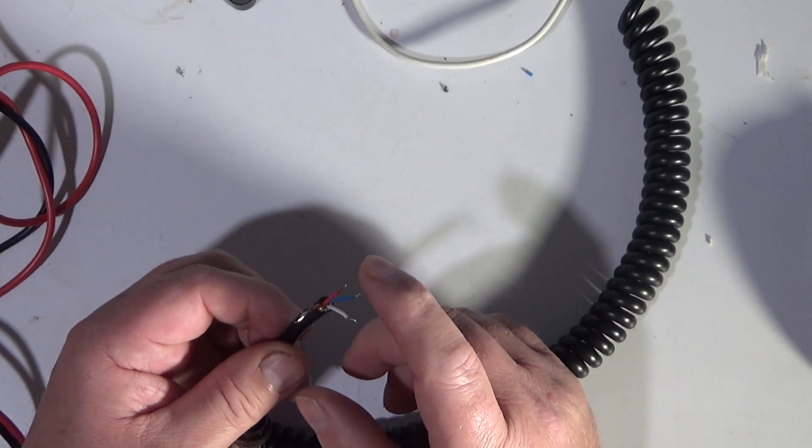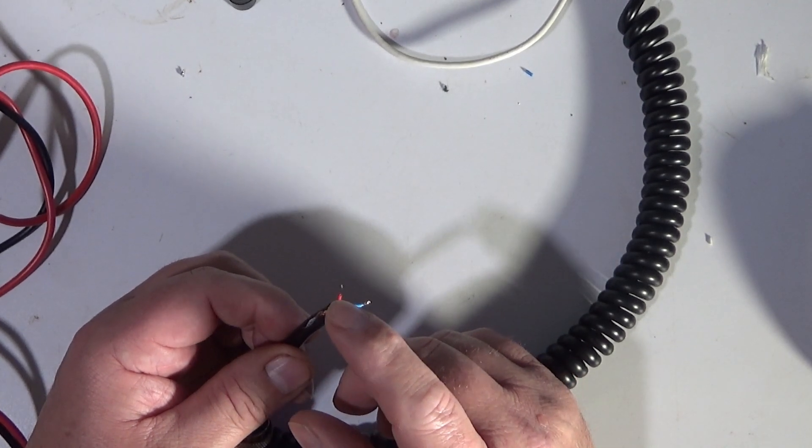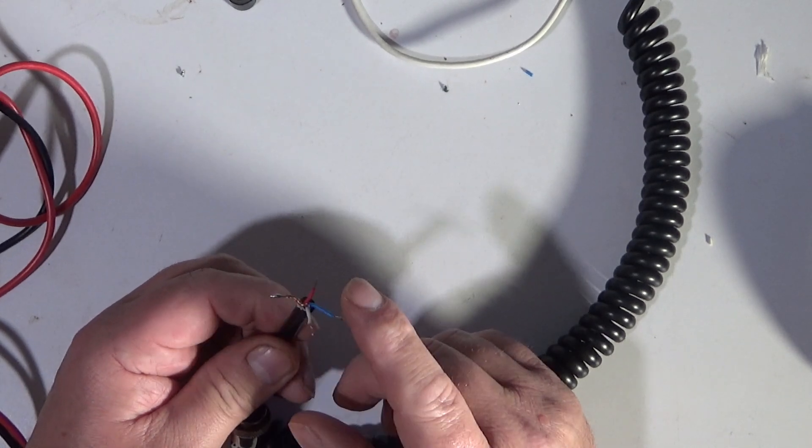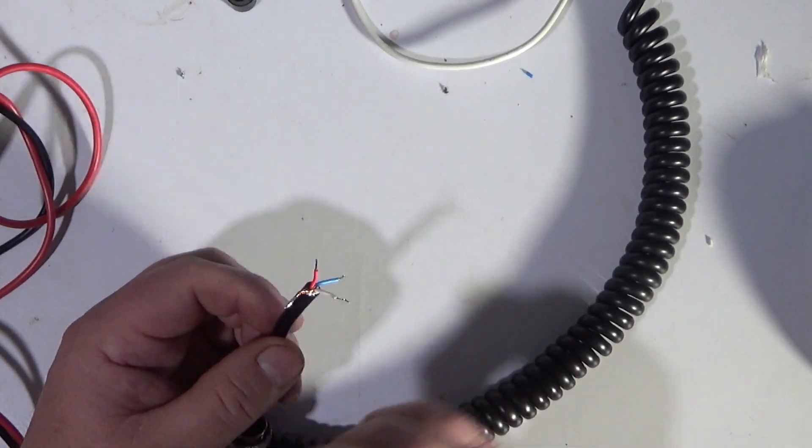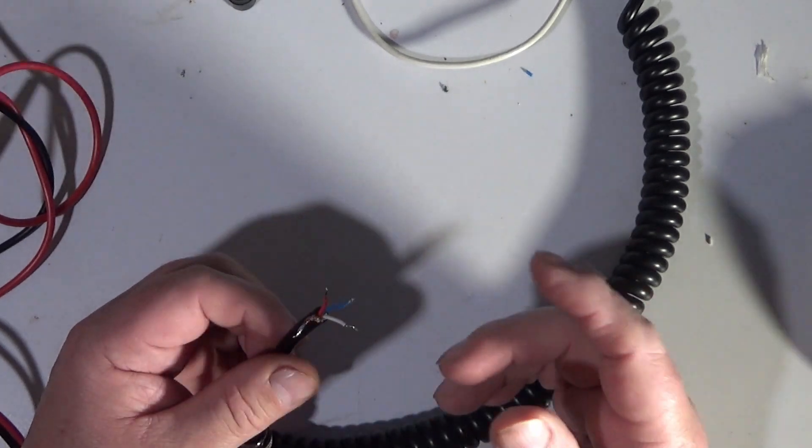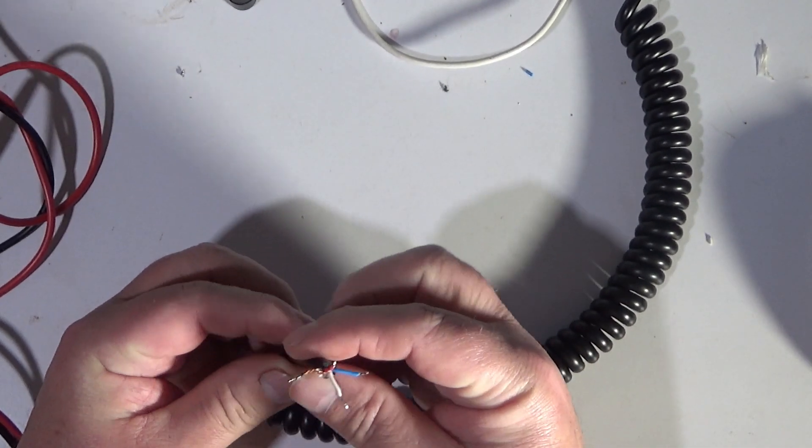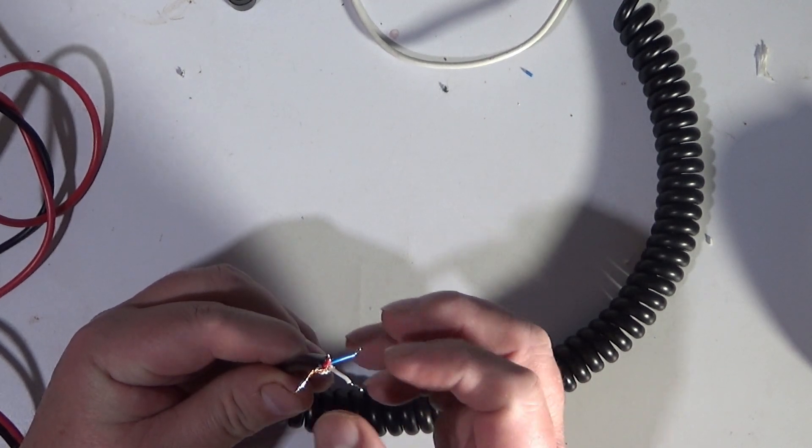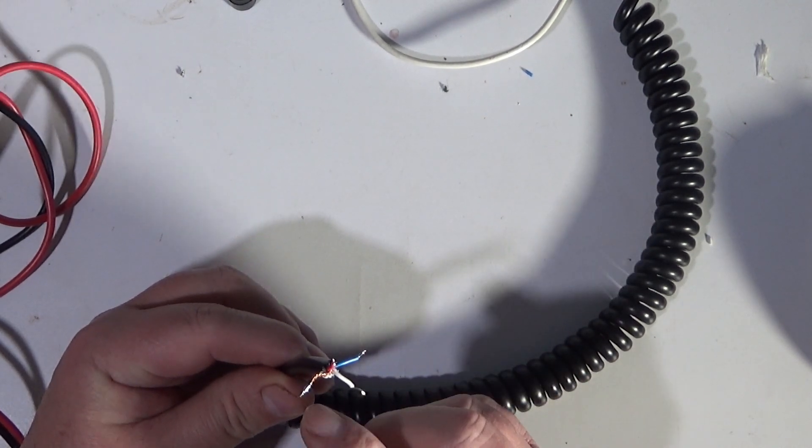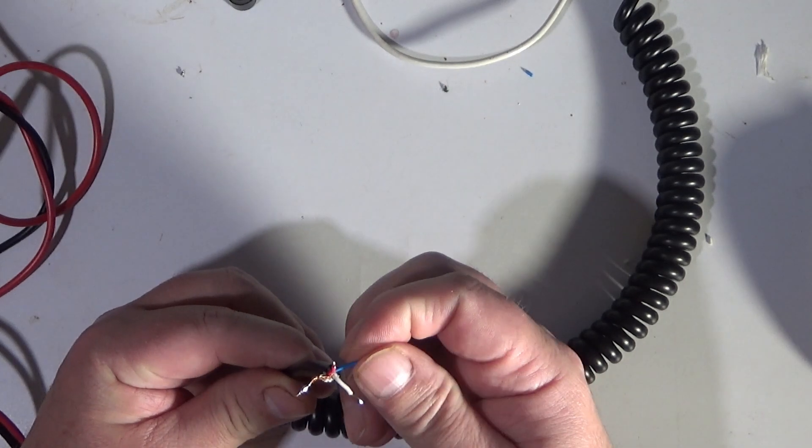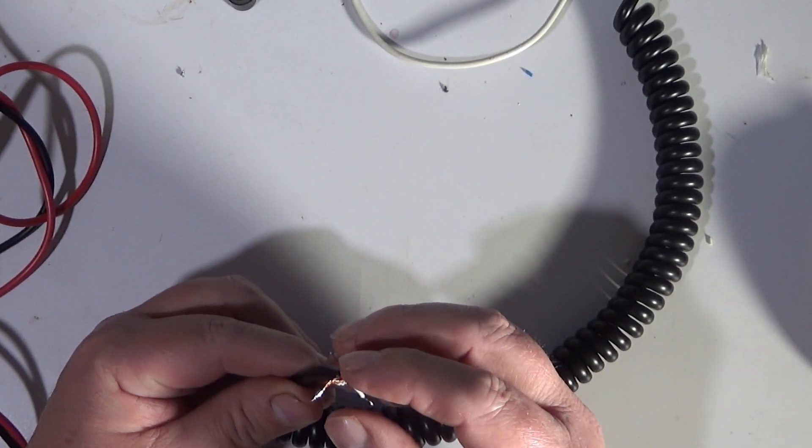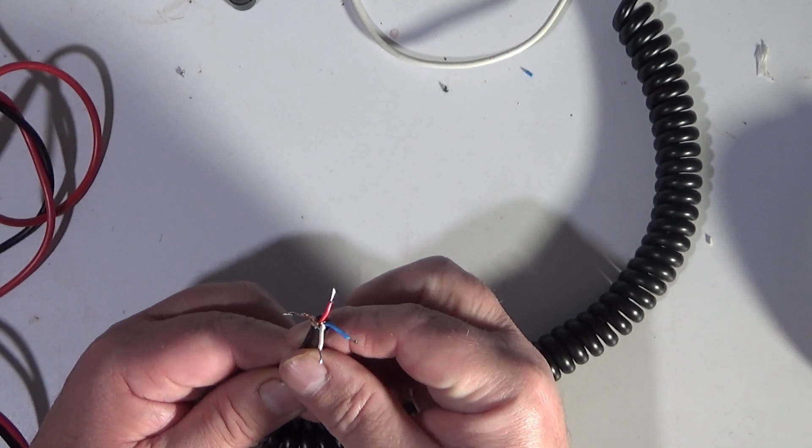Now quite often your audio wire might be white or it might be yellow. If you check with your meter, process of elimination on this particular one, dead simple, four wires, we've identified three, your common, your RX, your TX, the other one has got to be audio.